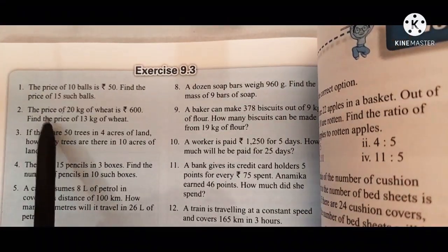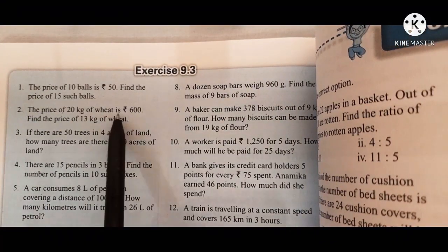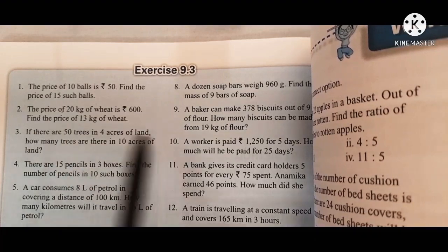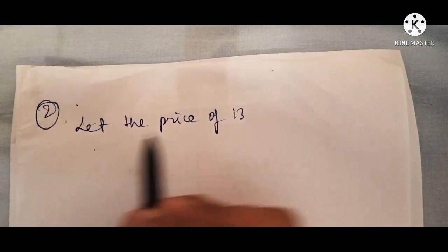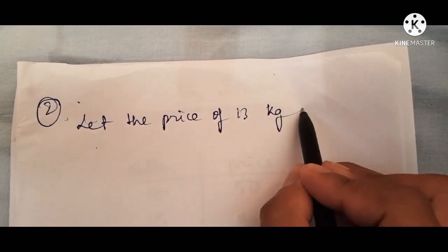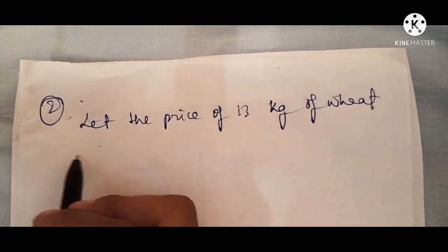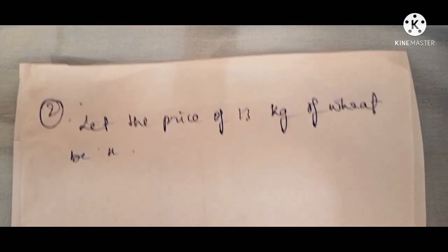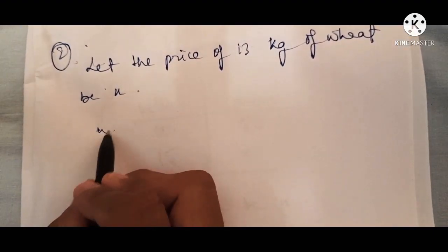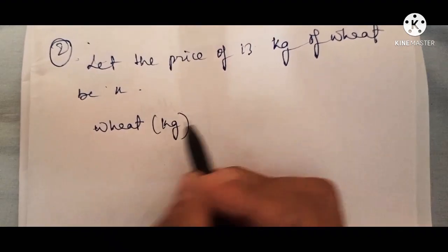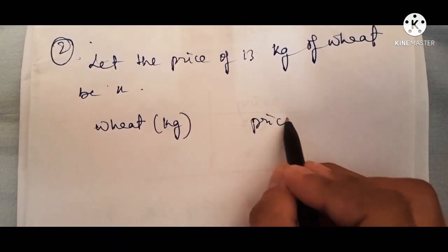Now we will do question number 2: the price of 20 kg of weight is rupees 300, find the price of 13 kg of weight. Like we did in the previous question, we will do the same here. Let the price of 13 kg be x. We will make two columns — one for weight in kg and another for price.